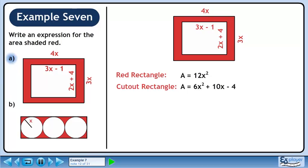Before continuing, let's organize our work. The full area of the rectangle is 12x² and the cutout area is 6x² plus 10x minus 4.